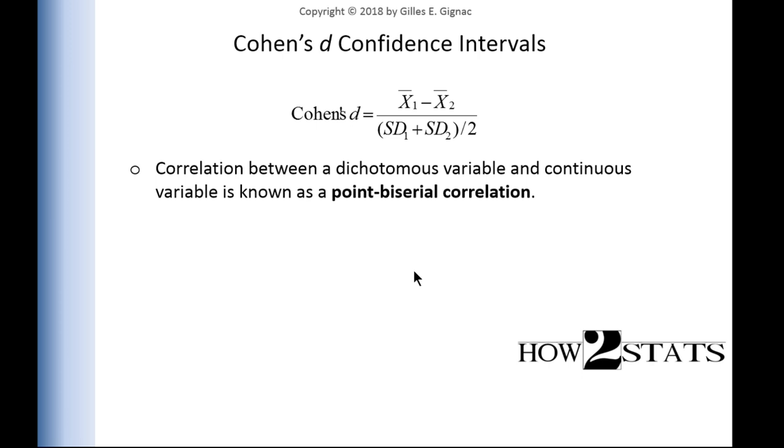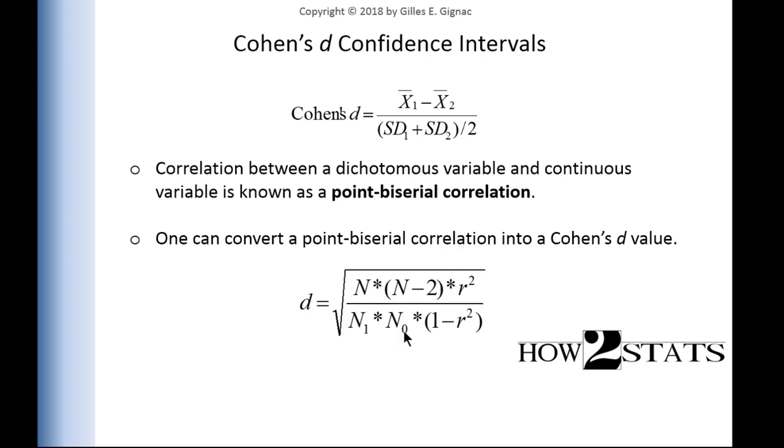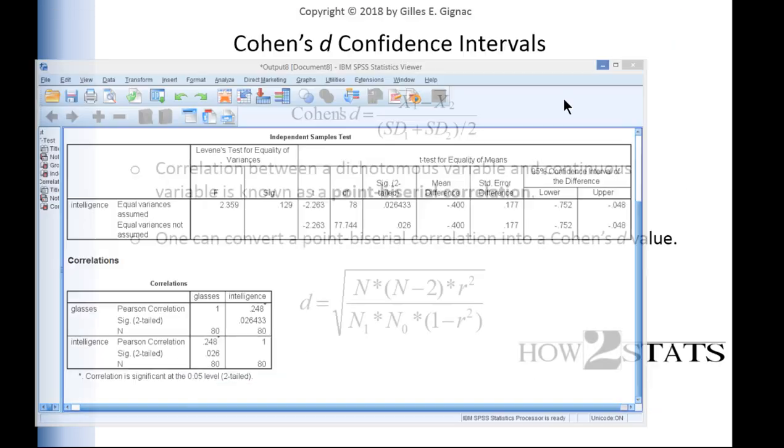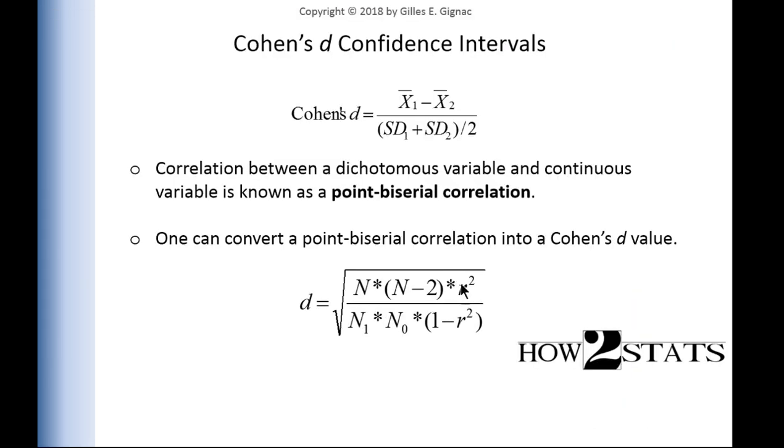The next point is that given that there's a connection between Cohen's d and the point-biserial correlation, I can convert a point-biserial correlation into a Cohen's d value. In fact, this is the formula you could use to calculate Cohen's d from r. So this correlation of 0.248 could be inputted into here, and we have the total sample size multiplied by total sample size minus 2 divided by sample size of group 1, sample size of group 0, or whatever order you want to put them in, and then multiplied by 1 minus r squared, that will give you Cohen's d. That's the connection between the correlation and Cohen's d.